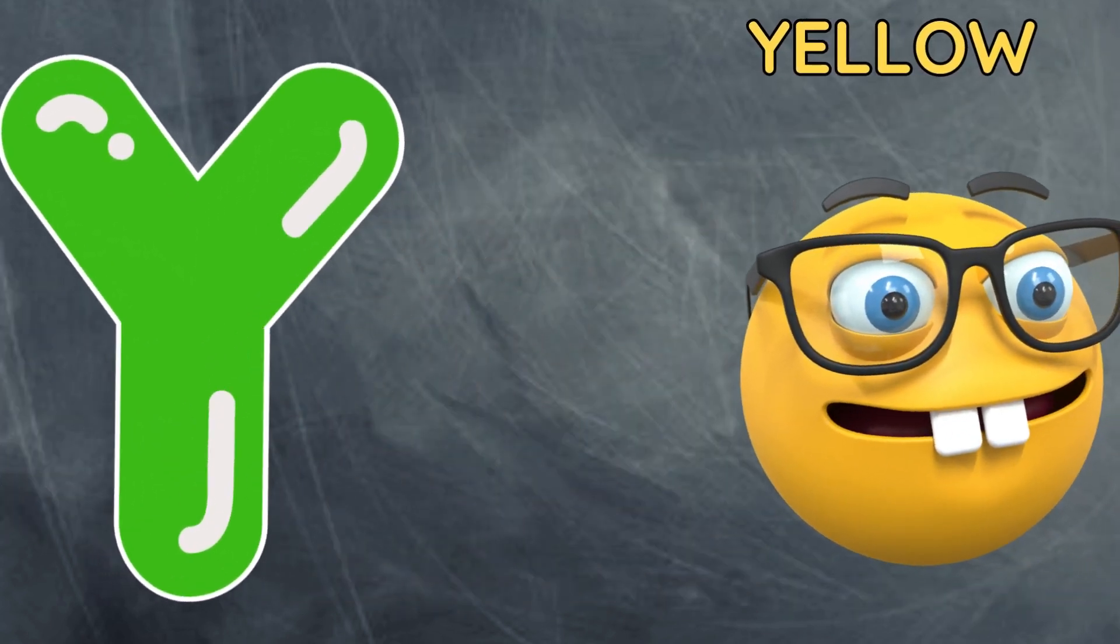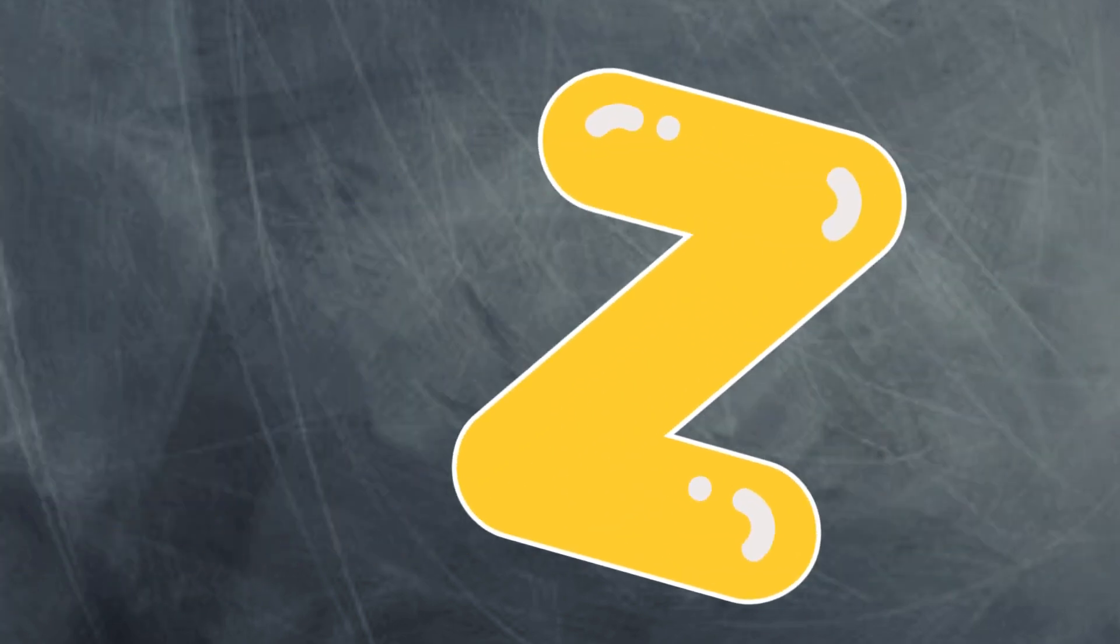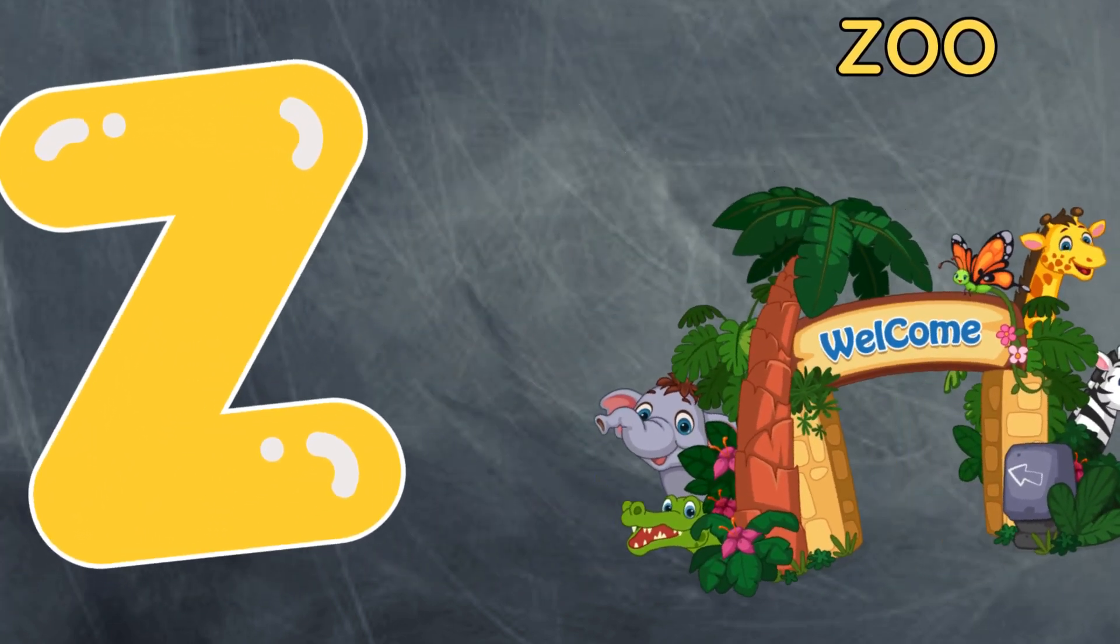Y is for yellow, y-y-yellow. Z is for zoo, z-z-zoo.